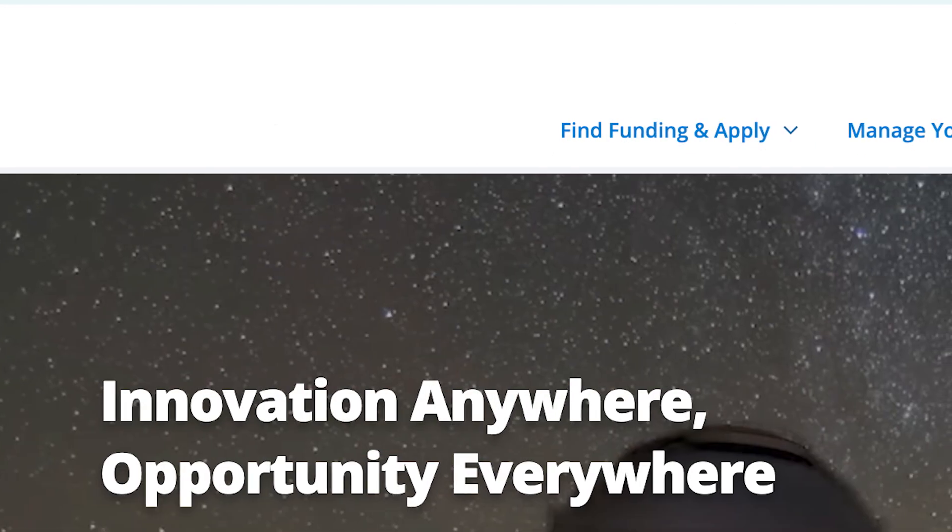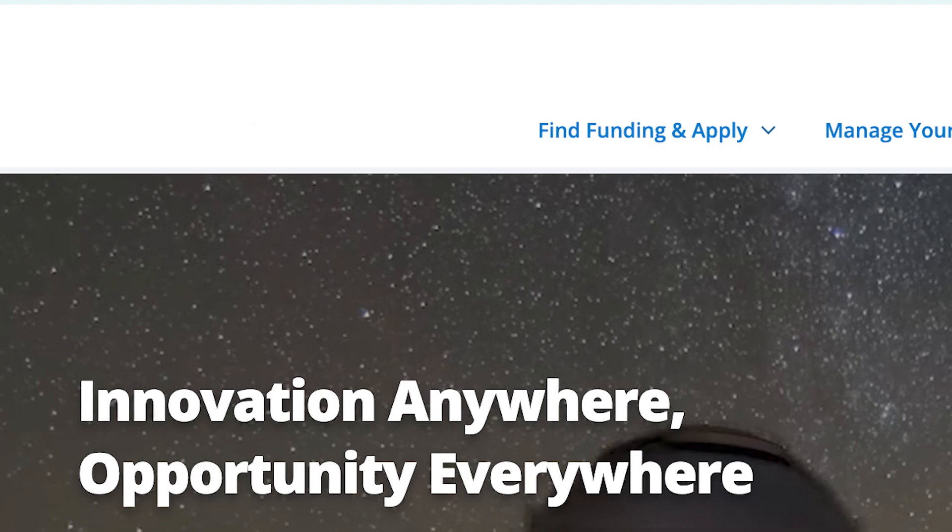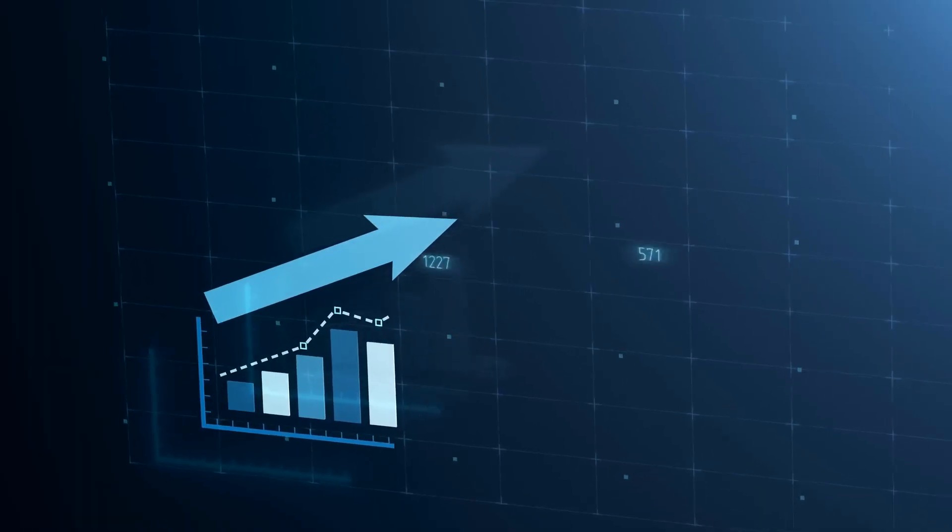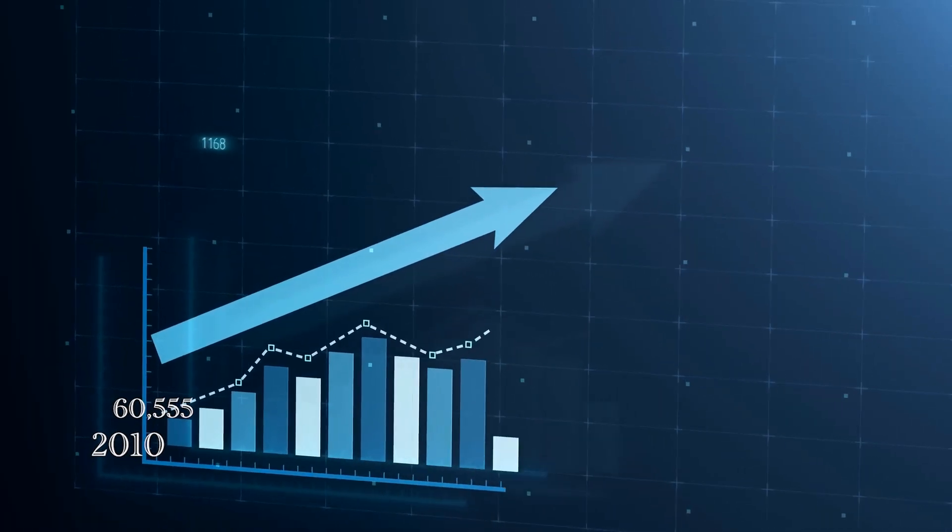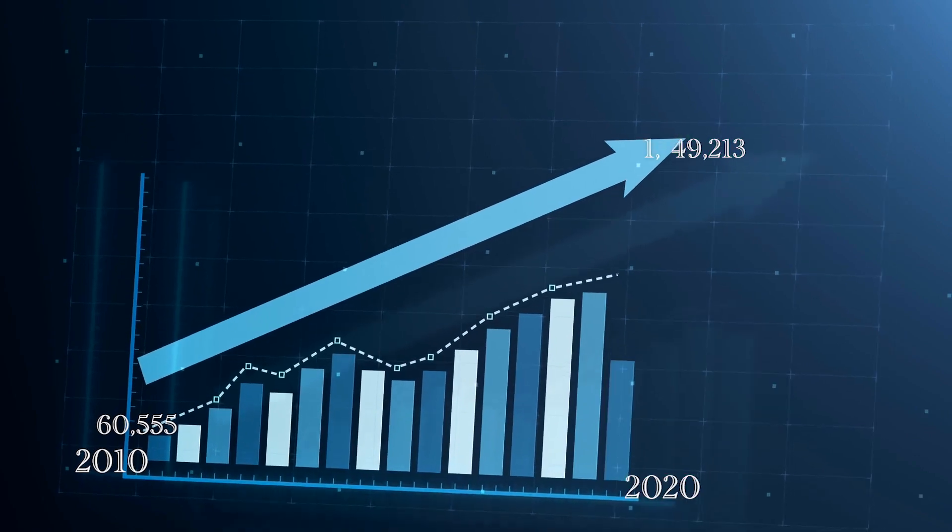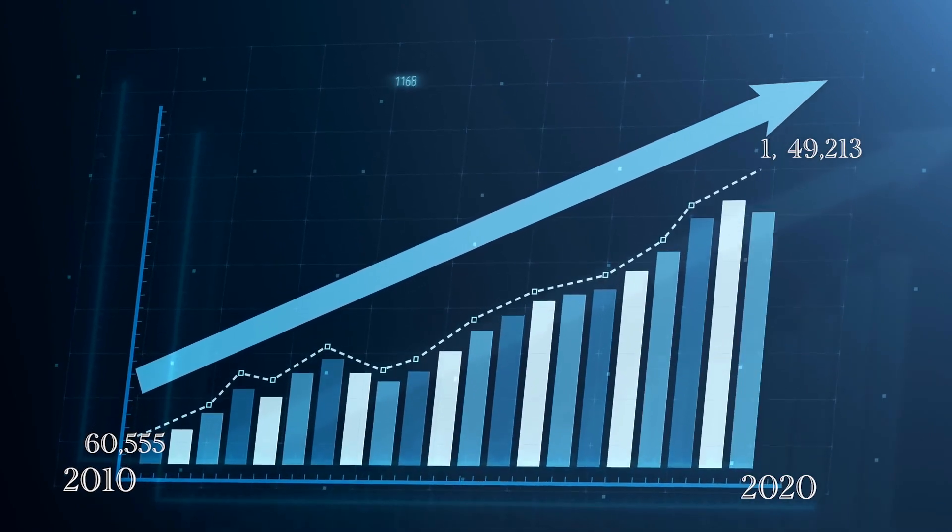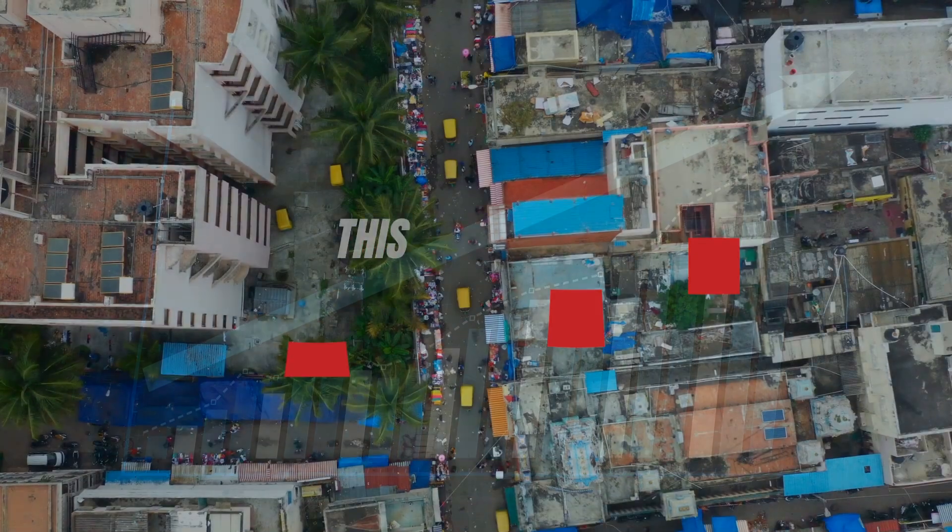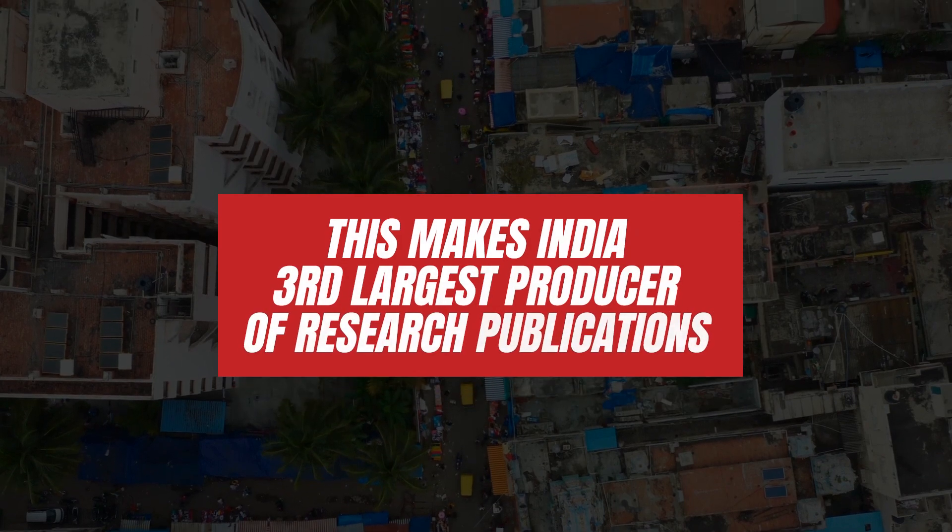According to a report by America's National Science Foundation, India's scholarly output increased from around 60,000 papers in 2010 to 150,000 papers in 2020, making India third-largest producer of research publications.